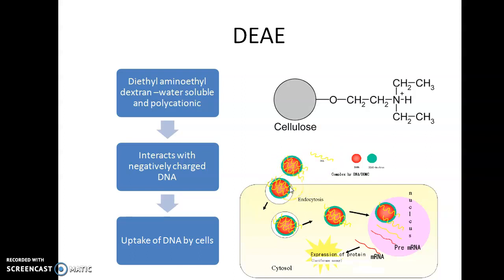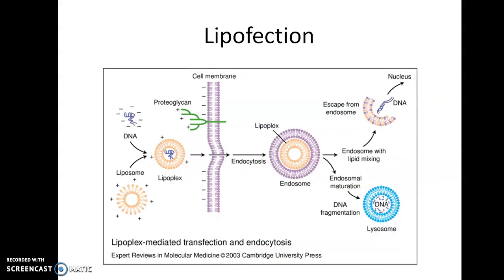Next is lipofection — the delivery of DNA into cells using liposomes, which are very small lipid vesicles. The required DNA is contained within the liposome. Cationic liposomes have a single lipid bilayer membrane and bind to cells efficiently. Liposomes interact with DNA spontaneously and fuse with tissue culture cells to facilitate delivery of DNA into the cell. It is a simple, highly reproducible, and efficient technique.